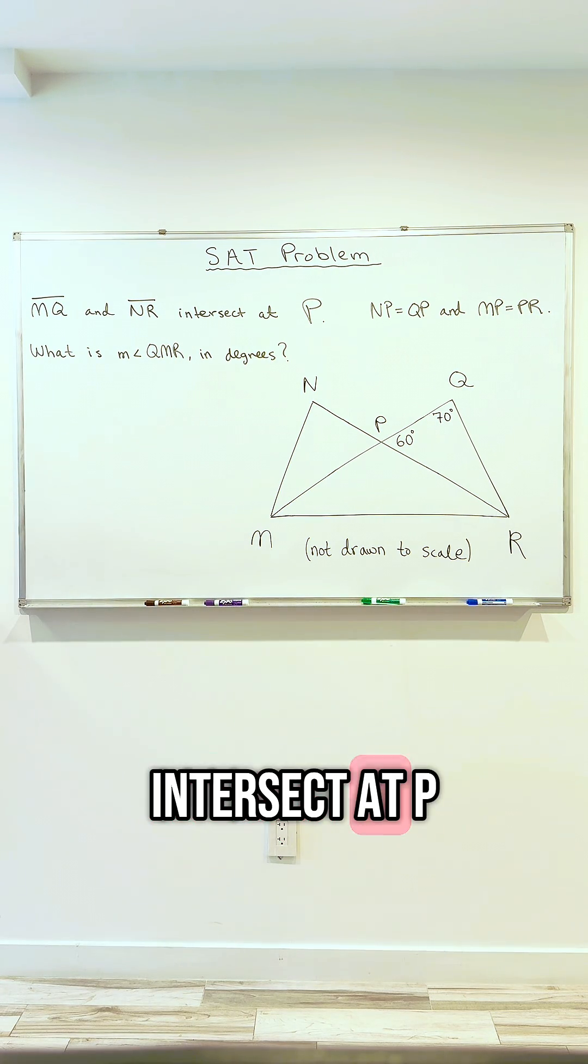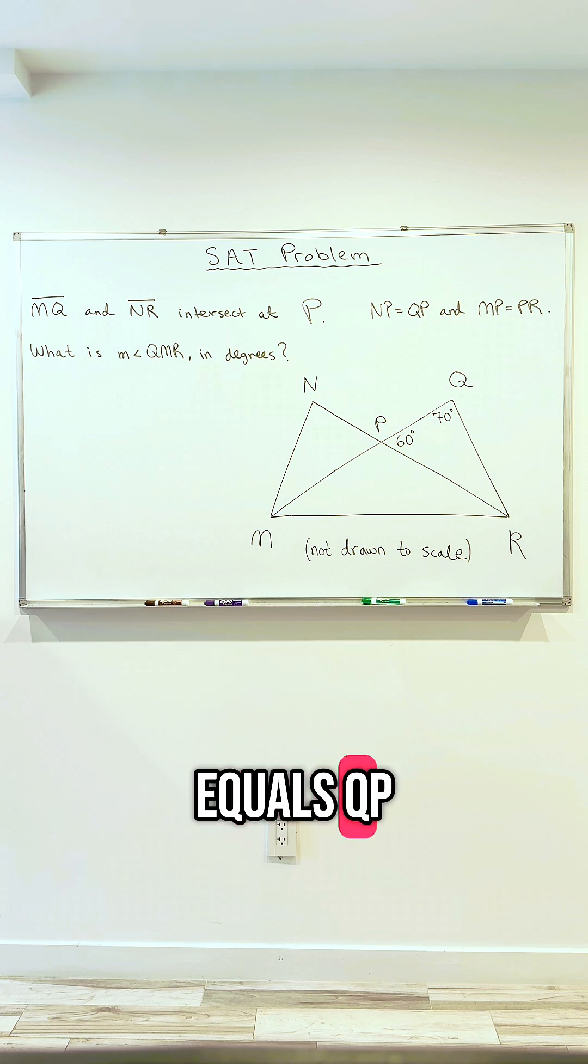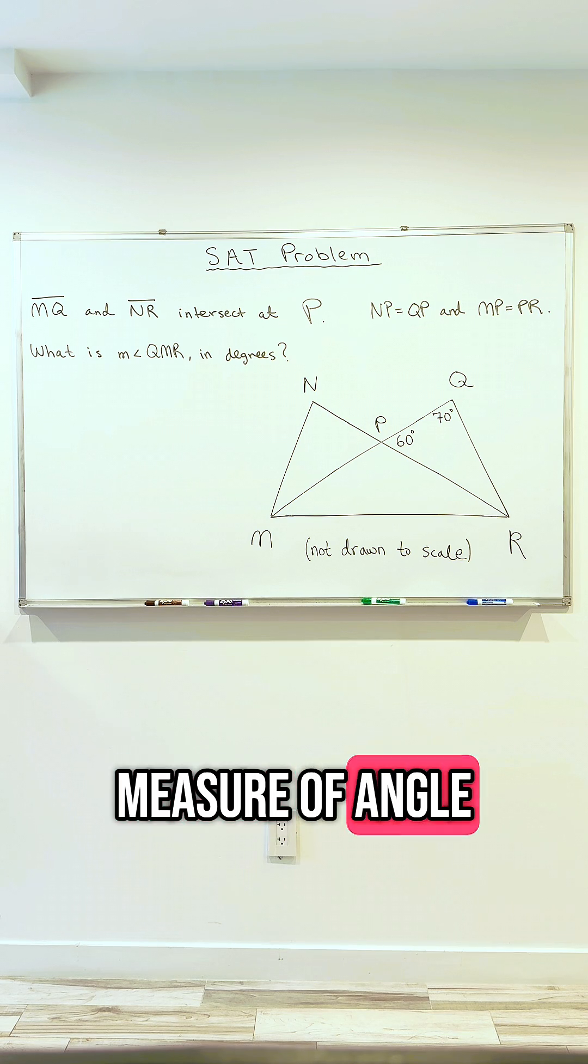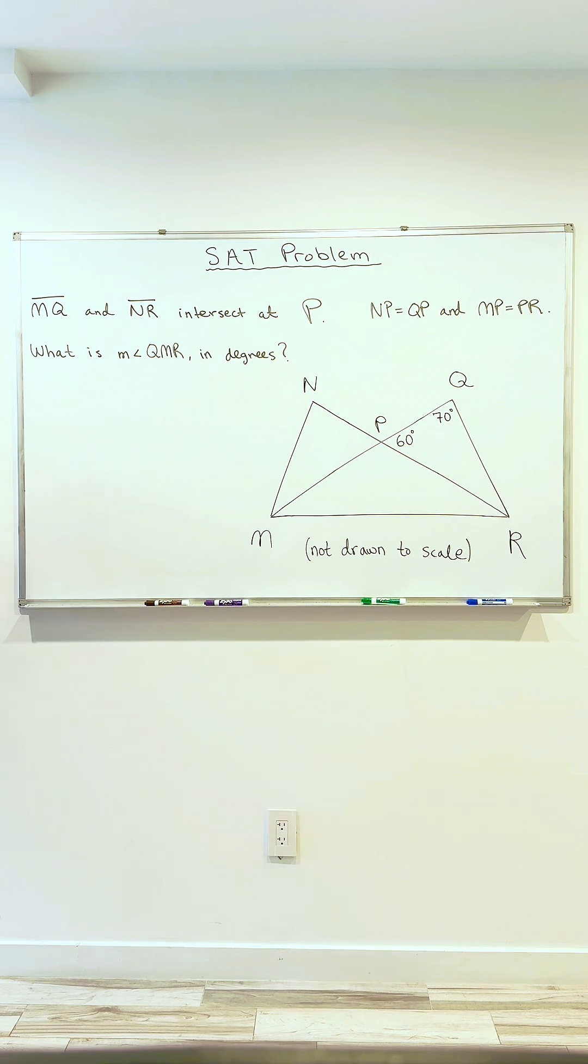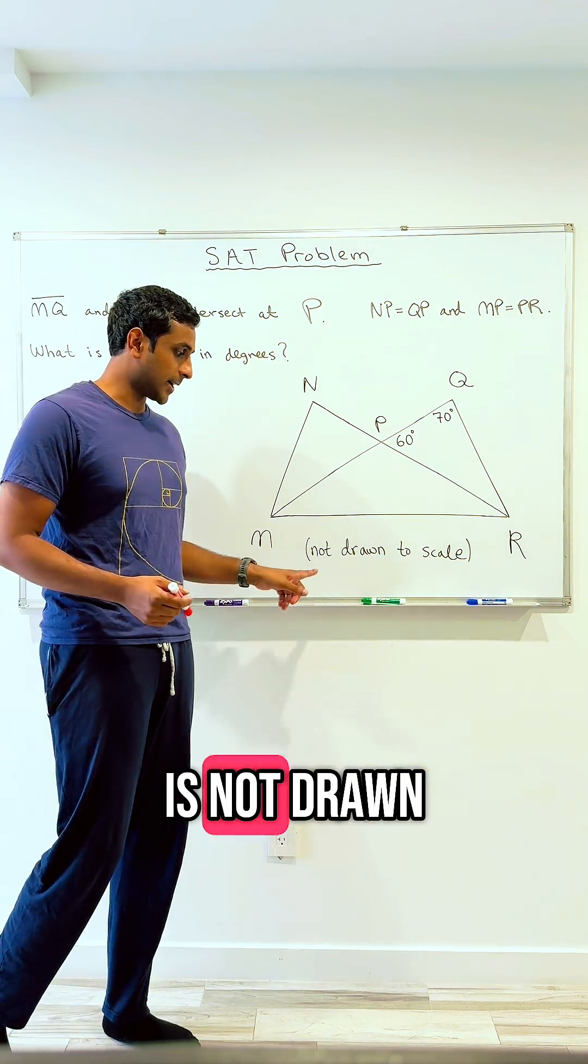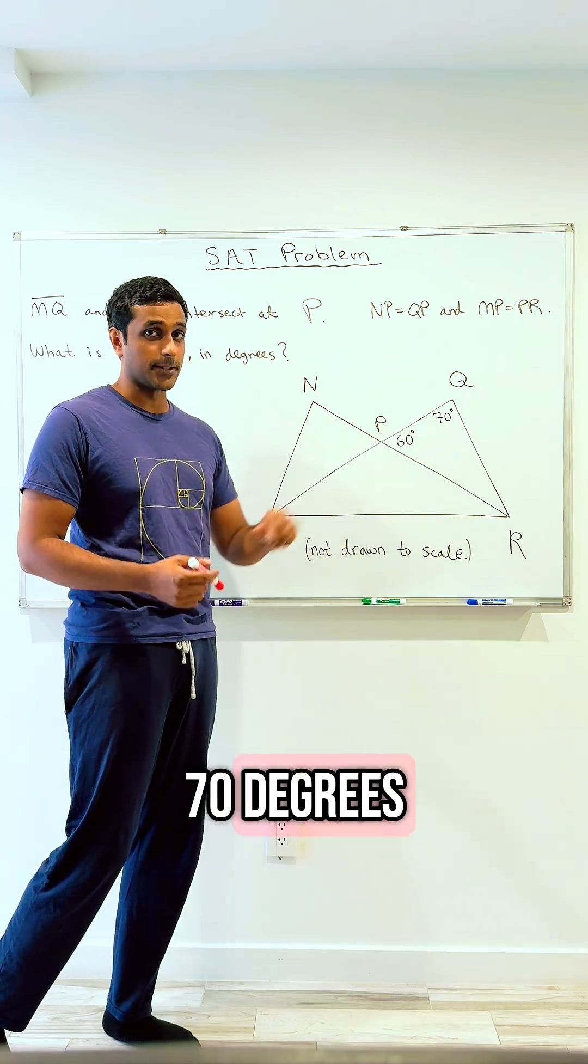MQ and NR intersect at P. NP equals QP and MP equals PR. What is the measure of angle QMR in degrees? And here is an amazing picture that is not drawn to scale, with two angles given, 60 degrees and 70 degrees.